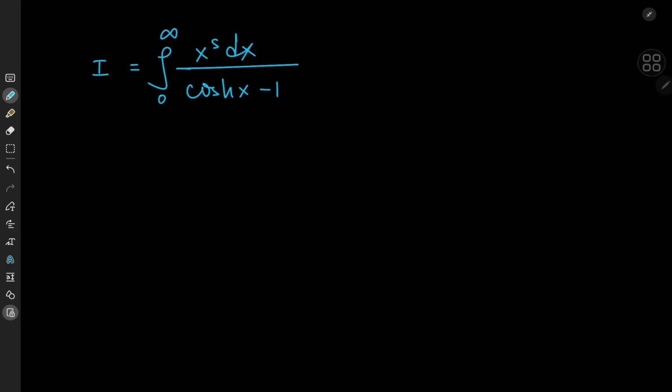Today we have this really cool integral you can show your friends at the next cult meeting. And I'm pretty sure it's completely normal for everyone to join one of those — perfectly normal. Anyway, we have the integral from 0 to infinity of x to the s dx divided by the hyperbolic cosine of x minus 1, where the parameter s is a complex number with real part greater than 1.